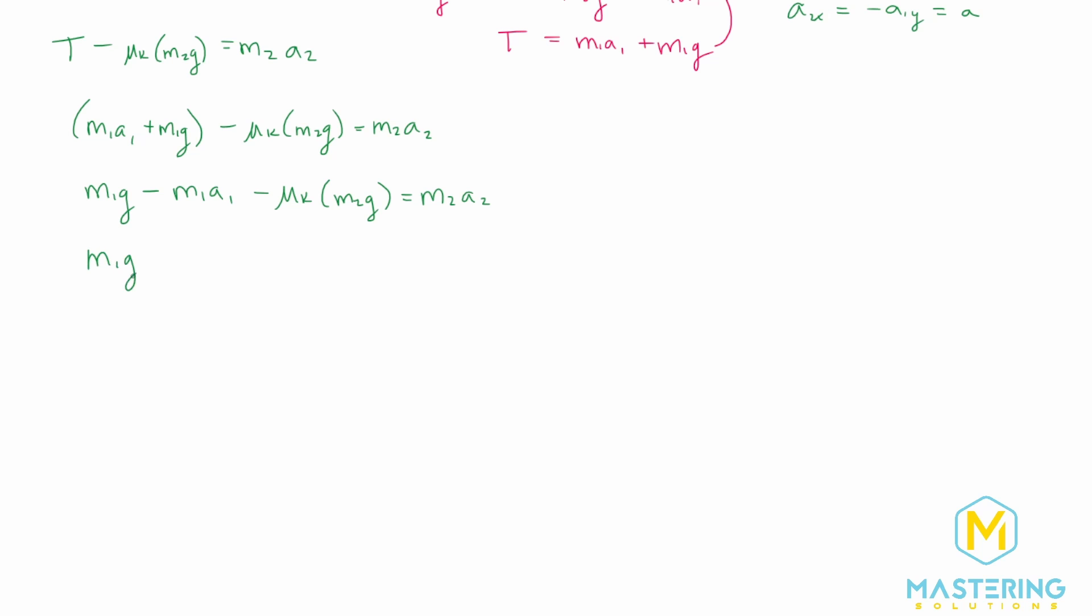So we have m1 g minus m1 times the acceleration minus mu sub k times m2 times the gravity is equal to m2 times acceleration. What we want to do here is we want to put everything that has the acceleration on one side and everything that doesn't on the other. So we'll have m1 g minus mu sub k times m2 g is equal to m2 a and we are going to add both sides of the equation by m1 a. So we'll add m1 a.